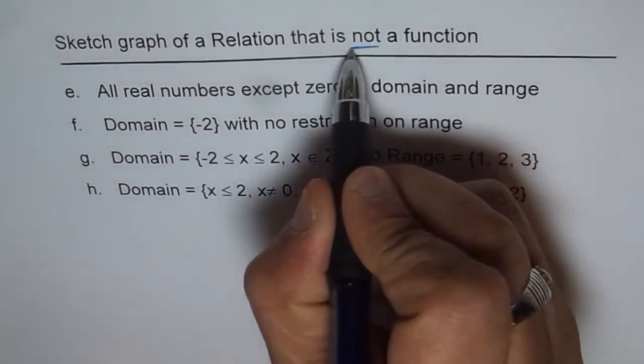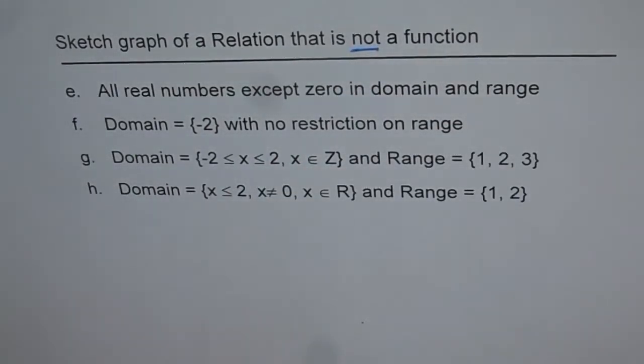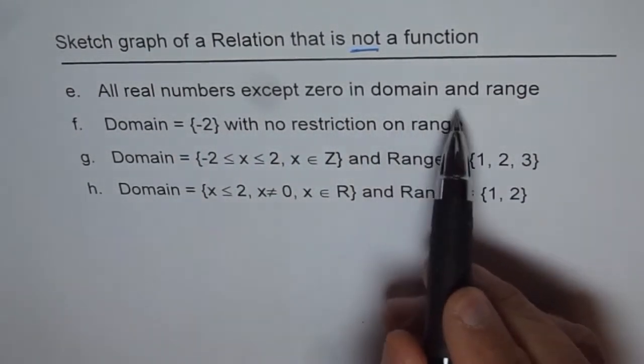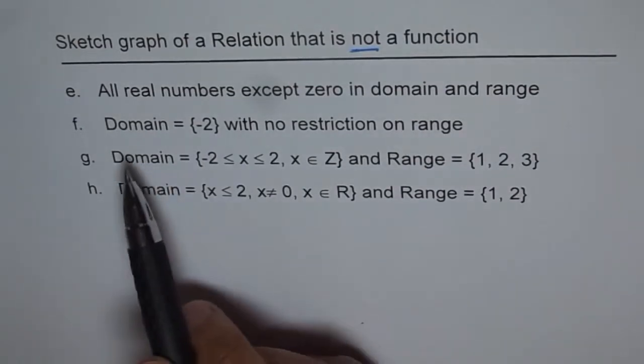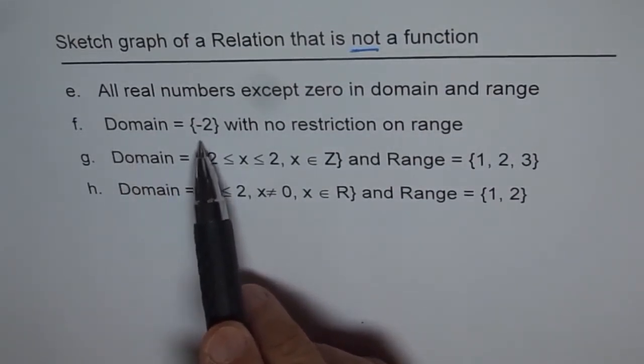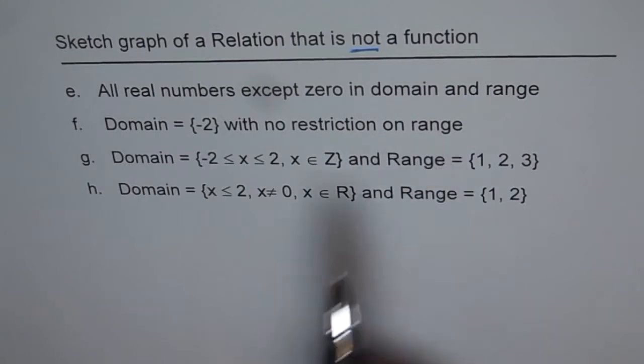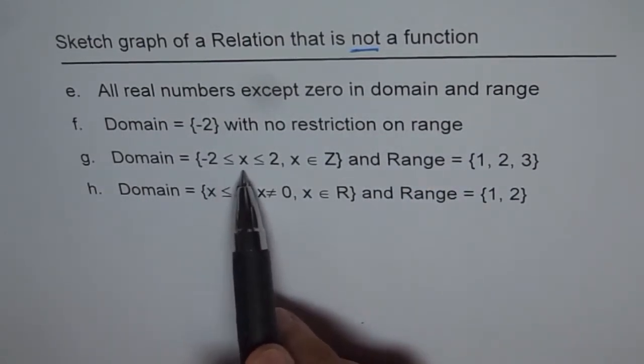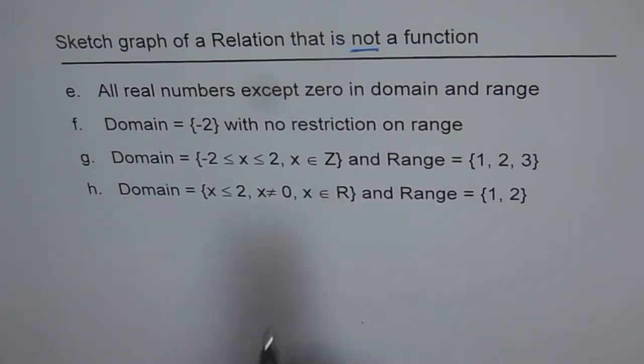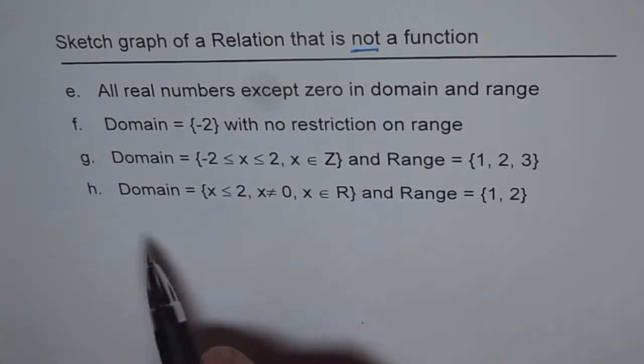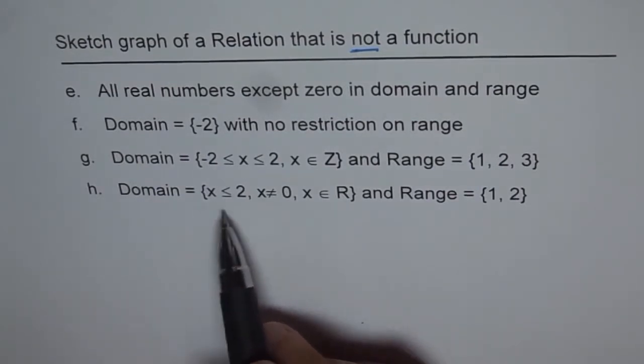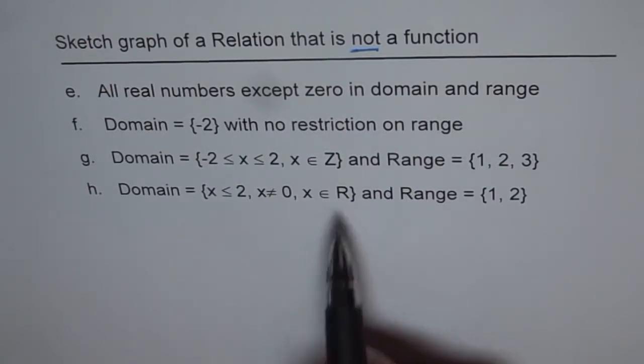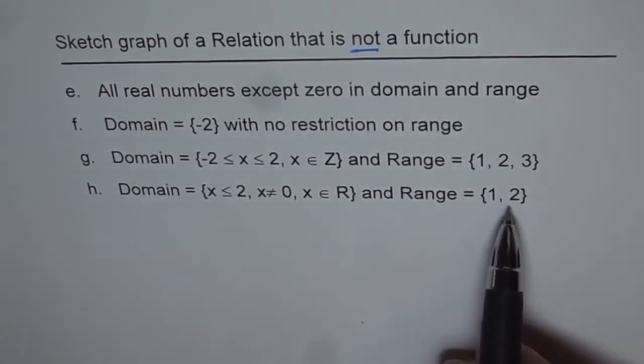That is not a function, which is very important here. So E is all real numbers except 0 in domain and range. F is domain equals {-2} with no restrictions on range. G is domain of {-2 ≤ x ≤ 2, x ∈ Z} and range equals {1, 2, 3}. H is domain {x ≤ 2, x ≠ 0, x ∈ R} and range equals {1, 2}.